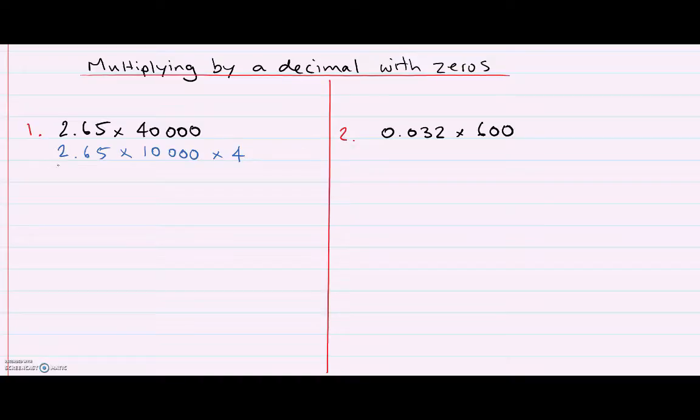Now what I'm going to do is multiply the 2.65 by 10,000. That just means I'm going to move my decimal point to the right for every zero that is there in the question. So 2.65 times 10,000 is going to move the decimal point 1, 2, 3, 4 spots to the right.